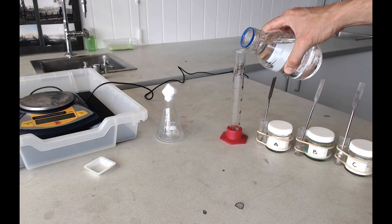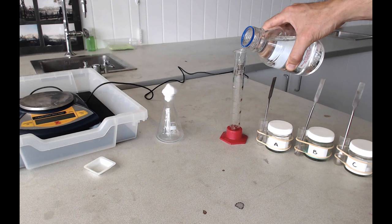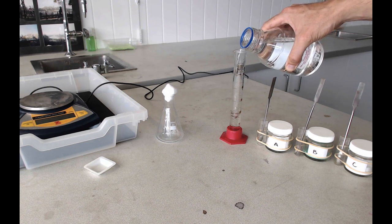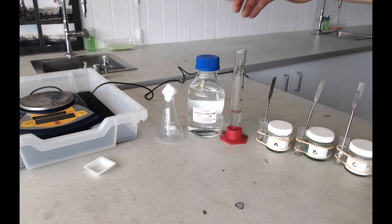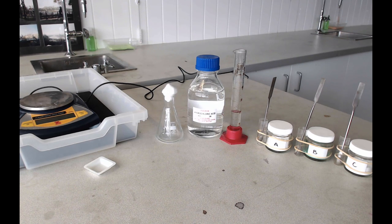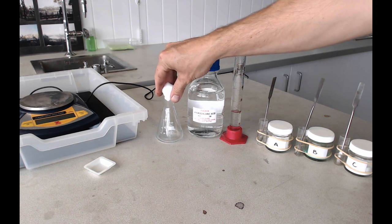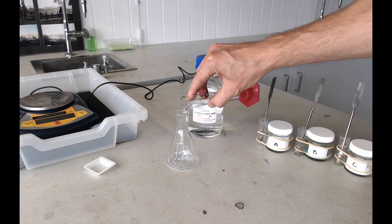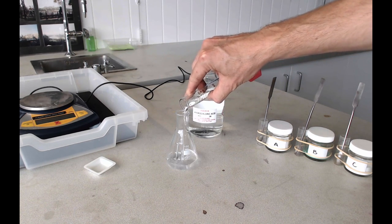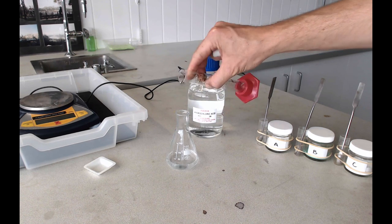About 20 ml, but it's not essential to be very precise about this. If you take a little bit more or a little bit less, that's absolutely fine. Once you've got your acid in your measuring cylinder, you can pour it into your conical flask. Remove the cotton wool plug and pour all that acid into your conical flask.